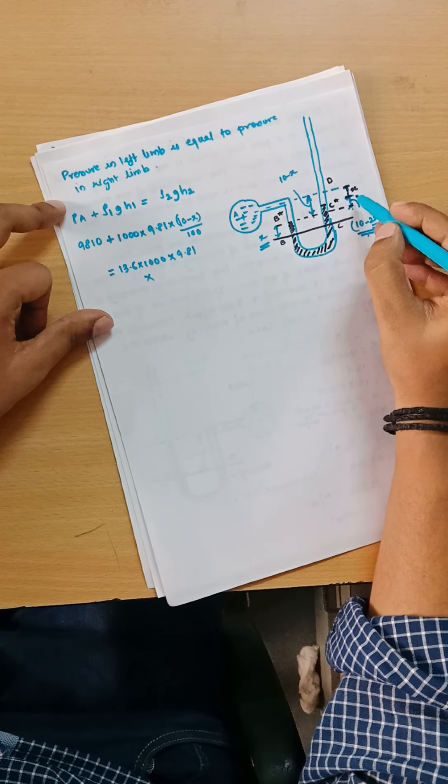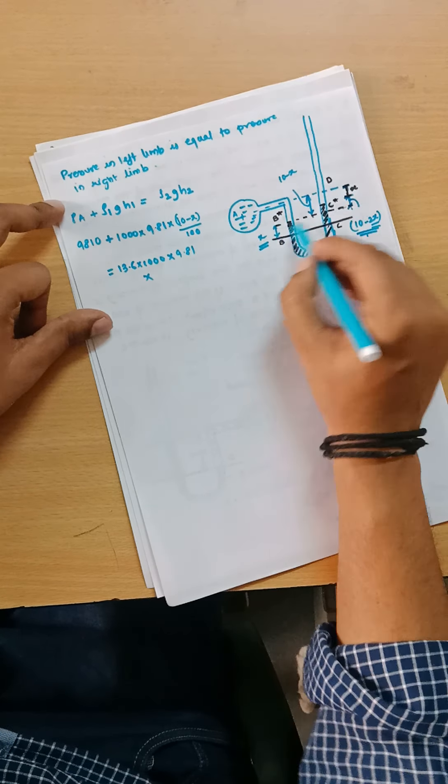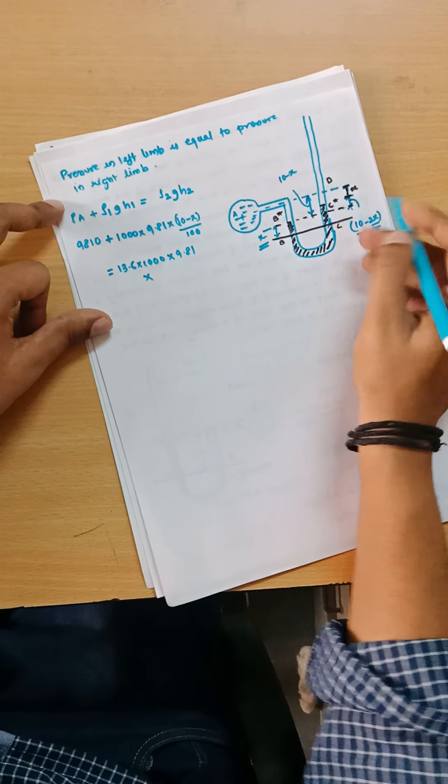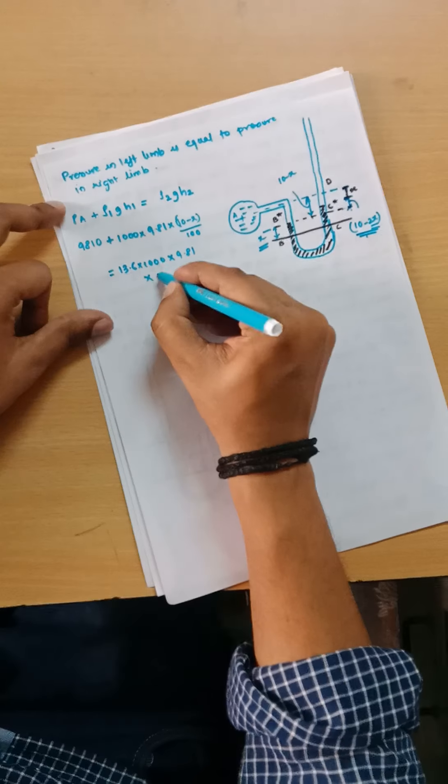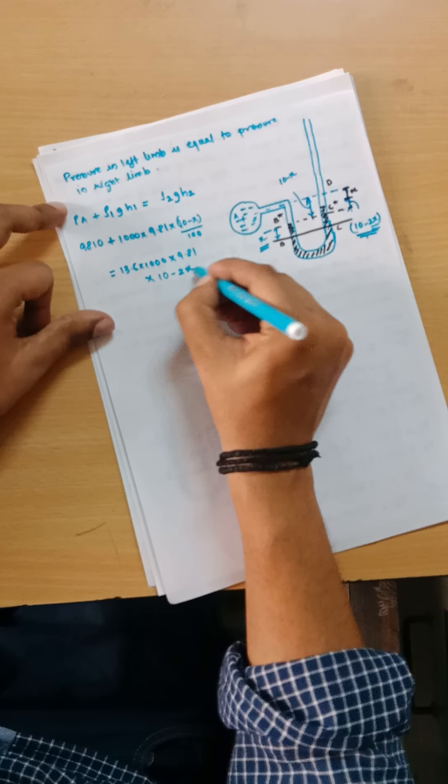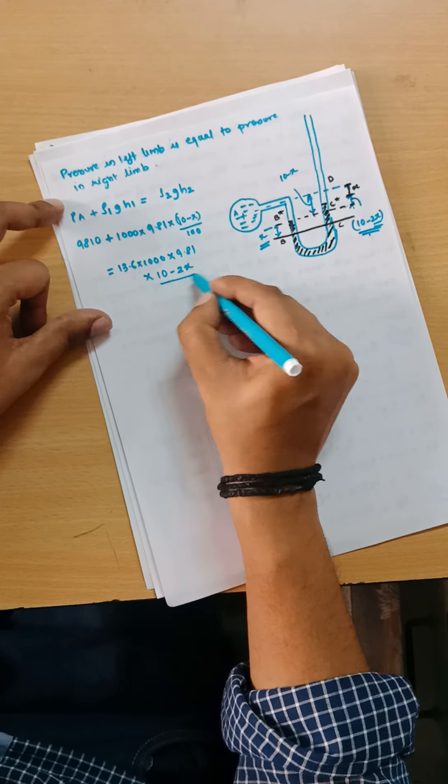So that will be ρ₂, which is mercury, so that will be 13.6 × 1000 × 9.81. And what will be the value of H₂? As you can see, it will be from this point to the new point, that is B*.